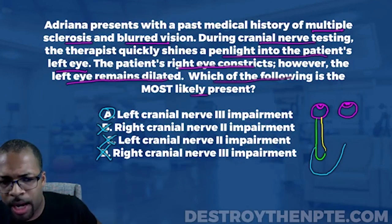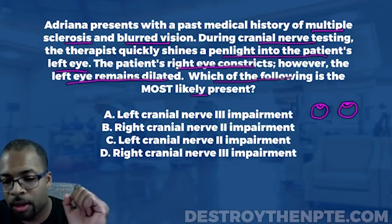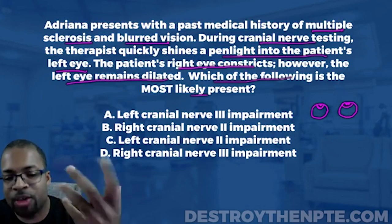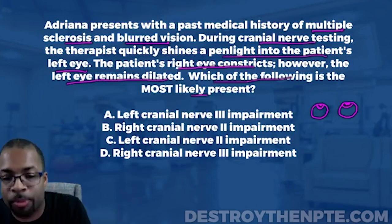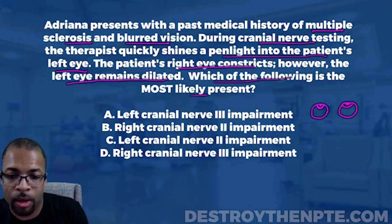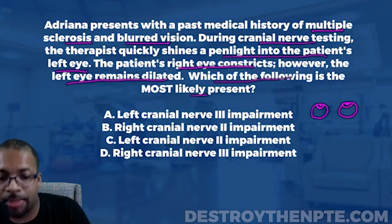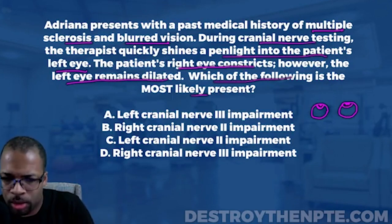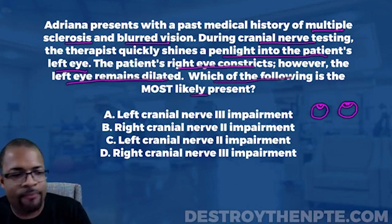When you shine a light into any eye, we're looking for something called the direct pupillary reflex. That means the same eye you shine the light into constricts — that's the direct pupillary reflex. Now, when you shine a light into the left eye and the right eye constricts — the opposite eye — that is called the consensual pupillary reflex. You need to know both terms for the NPTE.